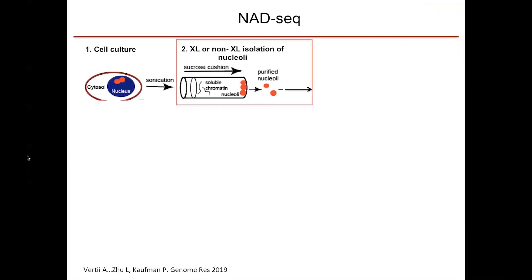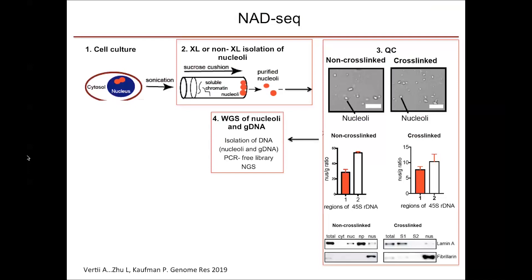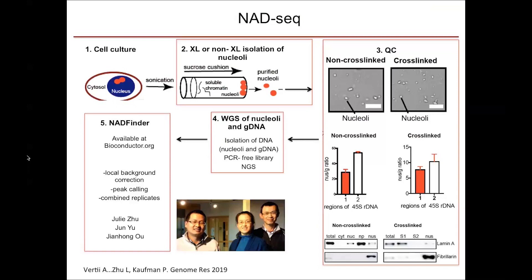We use both cross-linked and non-cross-linked methods to isolate nucleoli. After isolation, nucleoli are subjected to QC control based on phase microscopy. We look for enrichment in ribosomal DNA repeats, because nucleoli are organized around rDNA repeats, and we also check the protein composition — specifically enrichment in nucleolar proteins such as fibrillarin — while also trying to exclude lamins to separate LADs and NADs in our assays. After QC, we proceed to DNA isolation and sequencing. Reads are analyzed by NADsfinder, a software package available at Bioconductor.org developed by Julie Zhu, featuring local background correction particularly important for analyzing mouse acrocentric chromosomes.